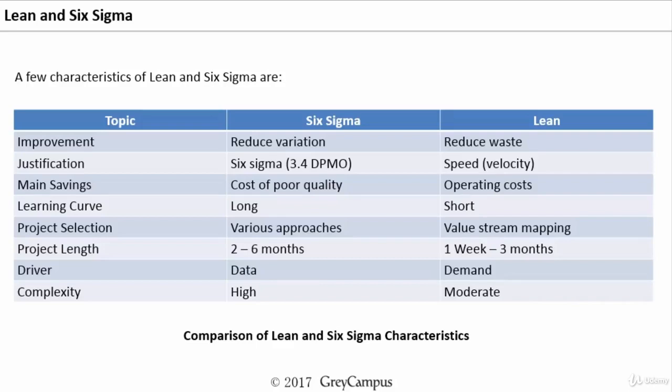For selecting a Six Sigma project there are various approaches, whereas for Lean the main selection method is value stream mapping — we will learn about that shortly. The project length is around four to six months for a Six Sigma project, whereas Lean can be done as quickly as within a week and the maximum time taken is around three months. So we can get quicker results through a Lean project.